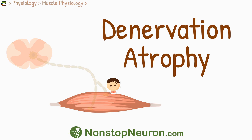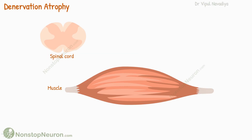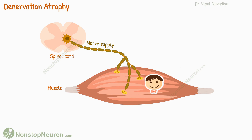In this video, we will talk about the denervation atrophy of muscles. When a muscle is innervated, it receives signals from the nervous system that stimulate and regulate its function. These signals are essential for muscle contraction, movement, and overall muscle health.